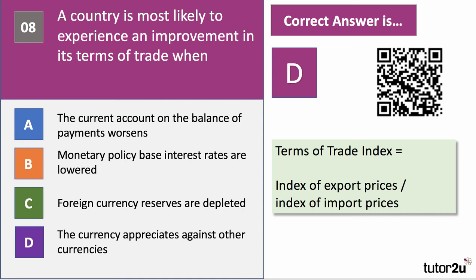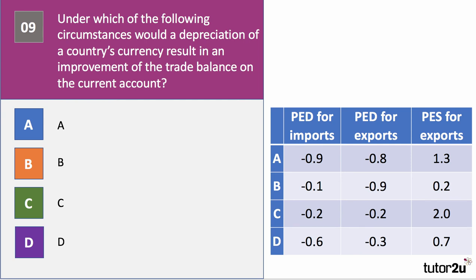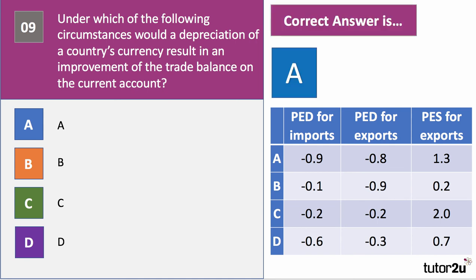If you want special revision notes on the terms of trade, point your camera at the QR code on screen. Question nine: under which circumstances will the depreciation of a country's currency result in an improvement of the trade balance on the current account? The answer is A — the Marshall-Lerner condition. This states that the balance of payments will improve if the sum of the price elasticity of demand for imports and exports is greater than one. In option A, the coefficients are 0.9 and 0.8, summing to 1.7, satisfying the condition. In B there is no change; C and D would worsen the current account. Price elasticity of supply of exports does not form part of the Marshall-Lerner equation.